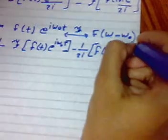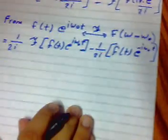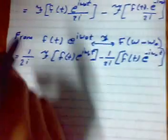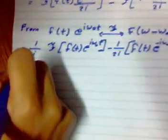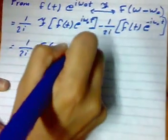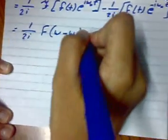And here is the property we will use, because this is f of t exponential omega naught t, that is F of omega minus omega naught.